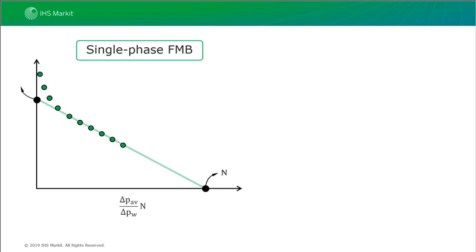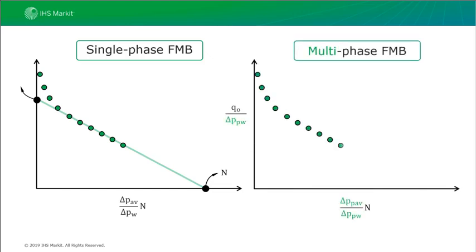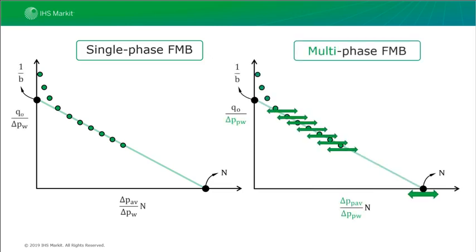The plot on the left is the single phase FMB which assumes constant fluid properties. The plot on the right is the multi-phase flowing material balance — it looks exactly the same but we assume N (which we don't know and are trying to find), guess the N so the data will plot somewhere around, and when we get the correct N they line up in a nice straight line which extrapolates down to the original oil in place.